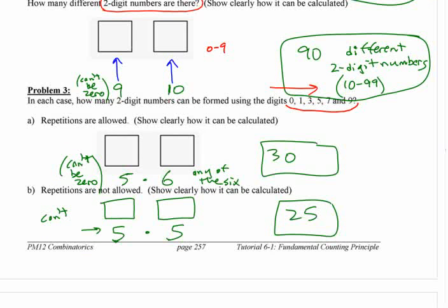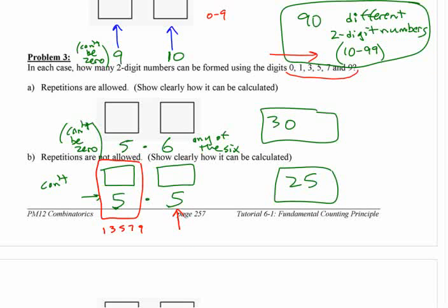If repetitions are not allowed, then you should think about starting with the one that has a restriction on it. This spot has a restriction in that it can't be zero, right? This can be one, three, five, seven, or nine, right? What can go here? Why is this five now and not six?